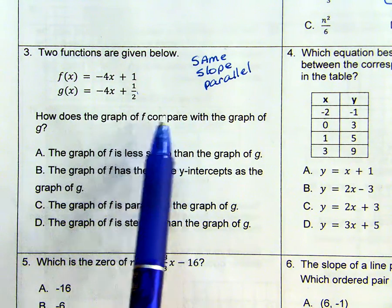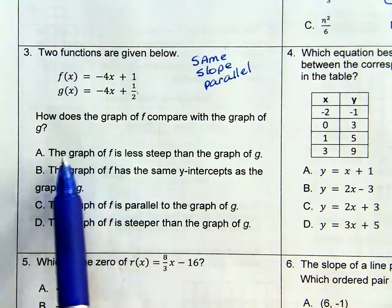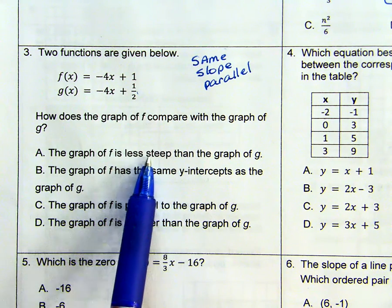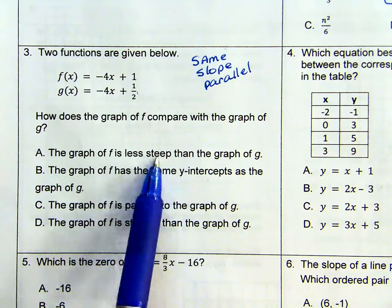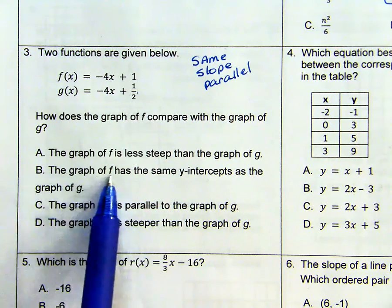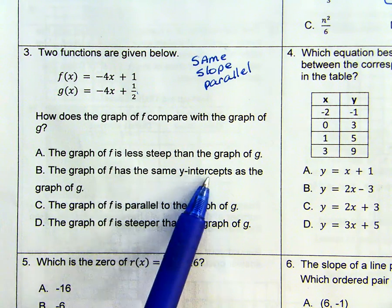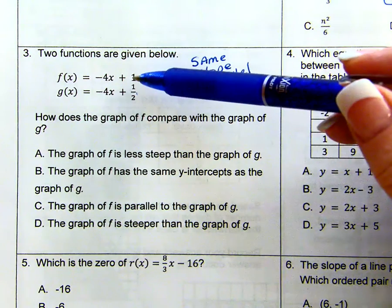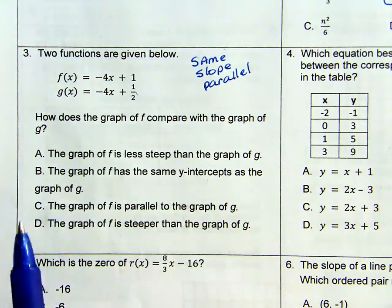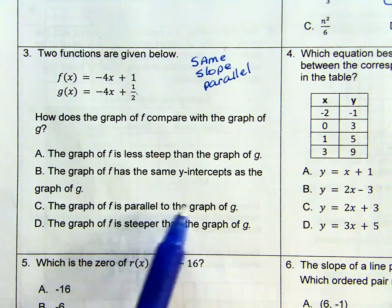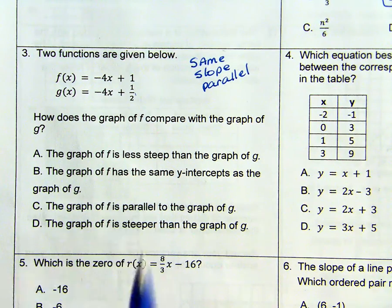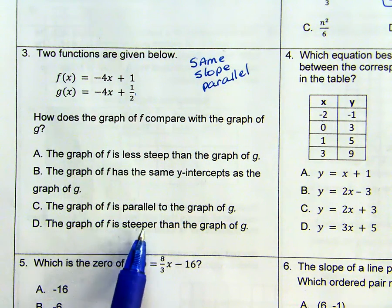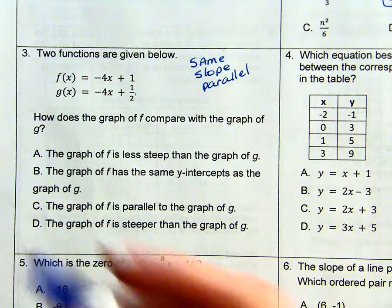So how does a graph of f compare with a graph of g? The graph of f is less steep. That's not true because they're parallel. They have the same steepness. The graph of f has the same y-intercept. That's not true because it has a 1 where g has a 1 half. The graph of f is parallel. That is true because they have the same slope. So if the graph of f is steeper, that's not true because they are parallel.